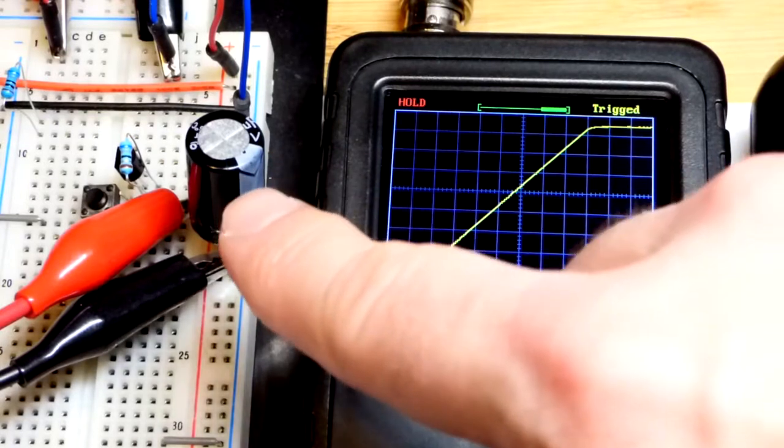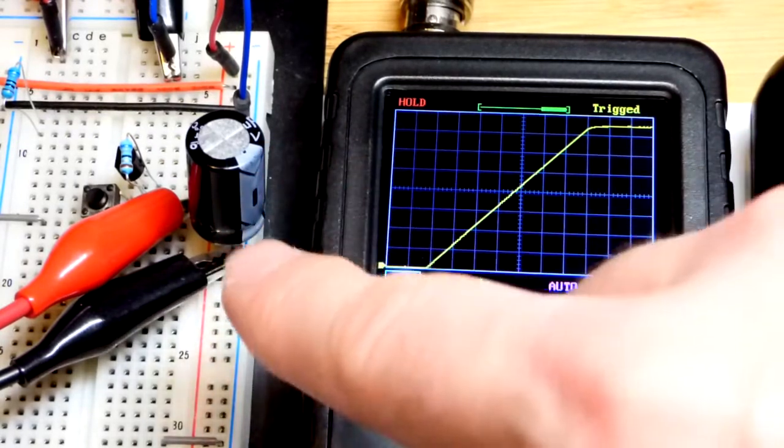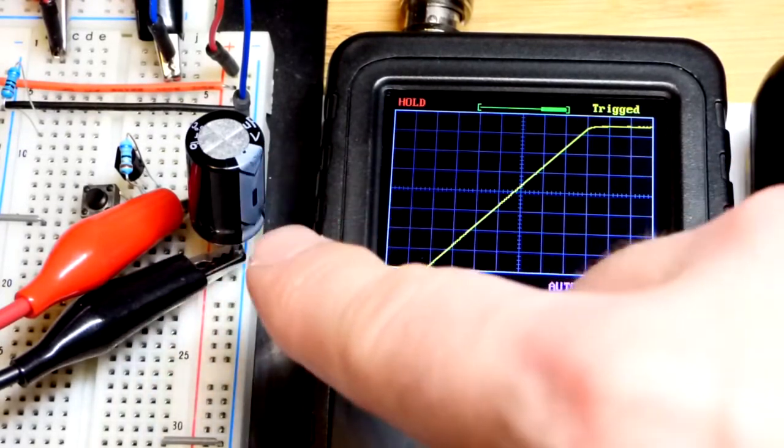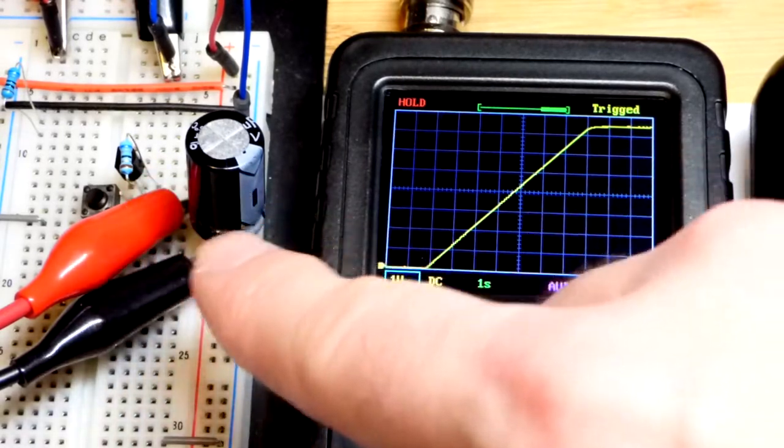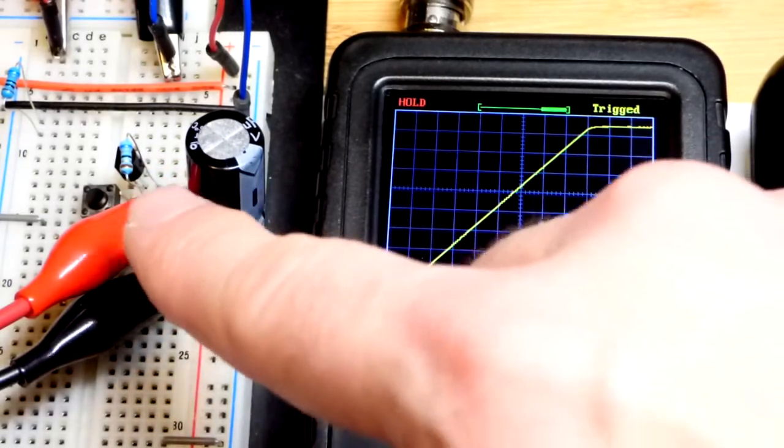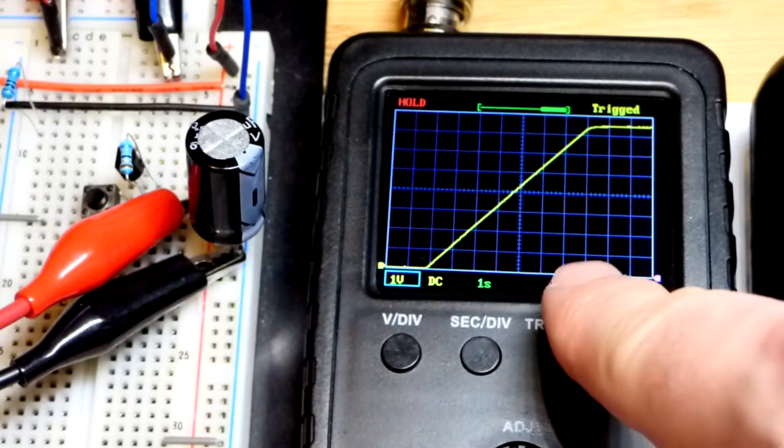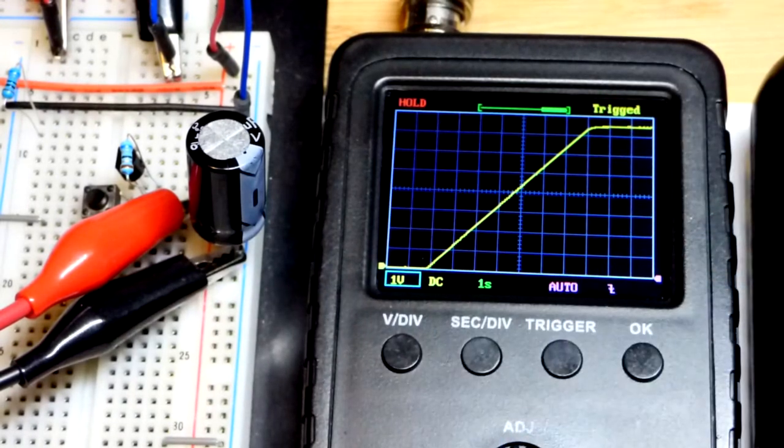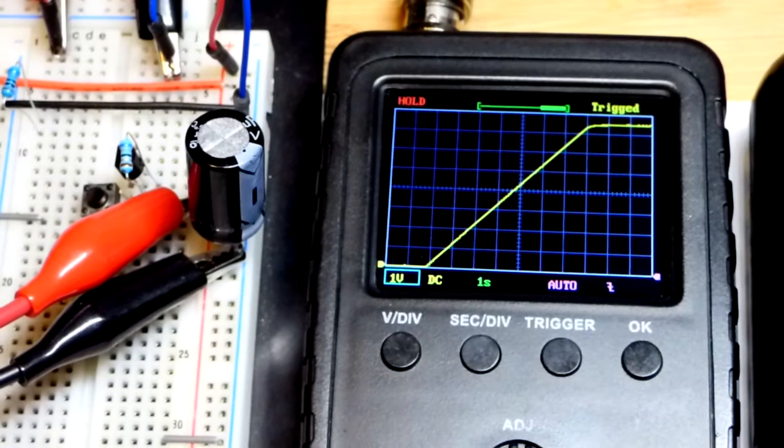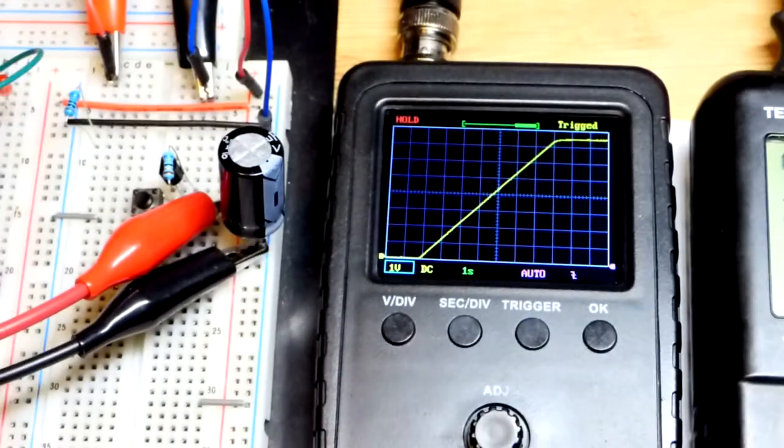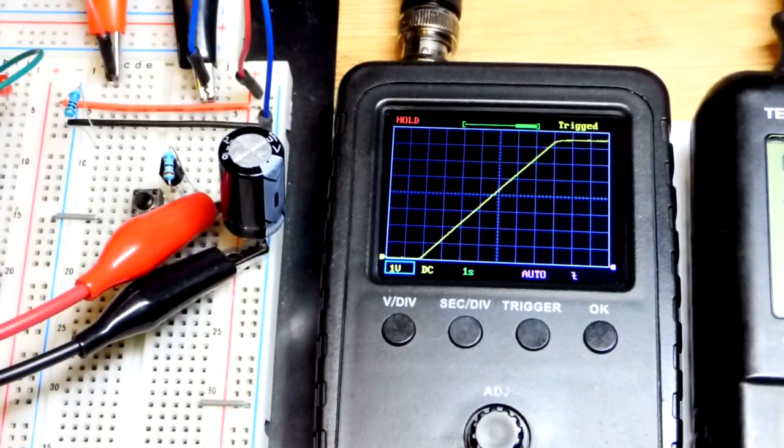So because we're using a 1,000 microfarad capacitor, that's 1,000th of a farad. And then one milliamp, which is 1,000th of an amp, that gives us a volt every second. That's one of the things about capacitors. If the current is steady, the voltage rise is steady.